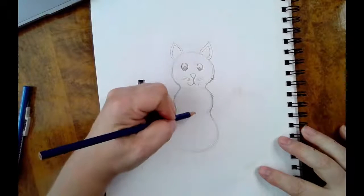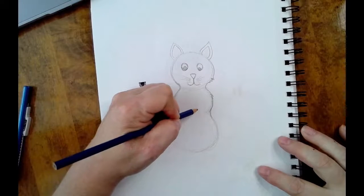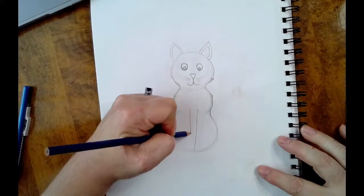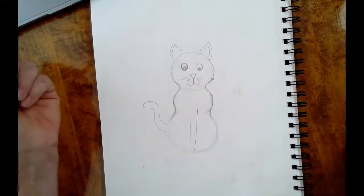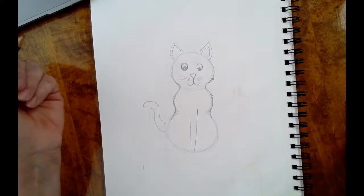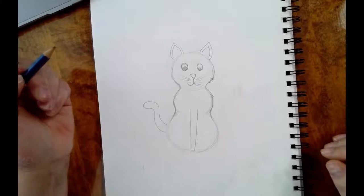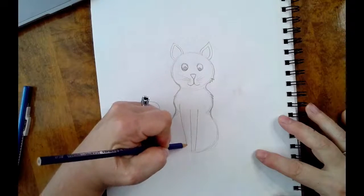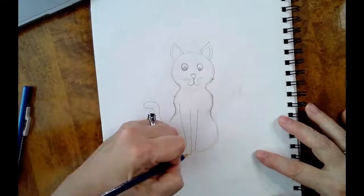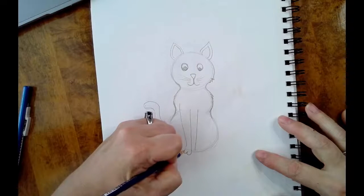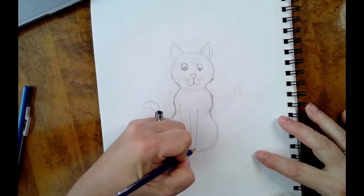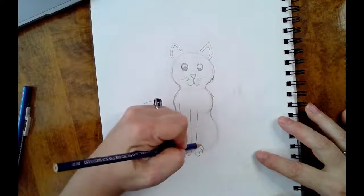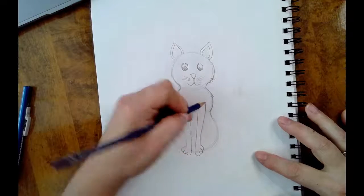I am going to give him some legs. So I'm going to go straight down to the bottom of my circle. And then I'm going to make bumps for his paws and make that other leg come back up.